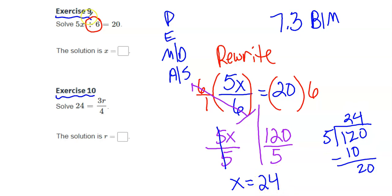Now I could check it by plugging it back in. 5 times 24 divided by 6, and do all of that with a calculator, and if it's equal to 20, then you know you have the right solution.